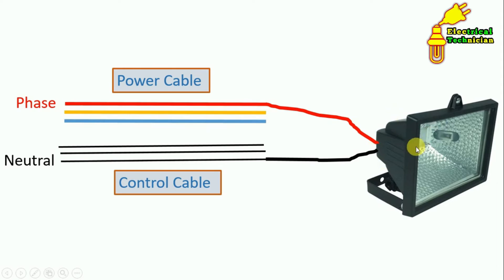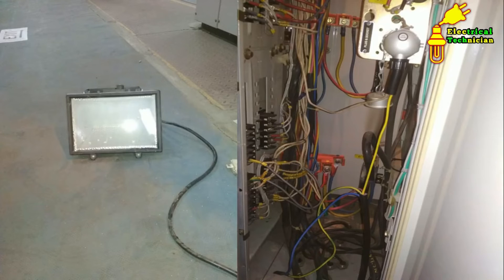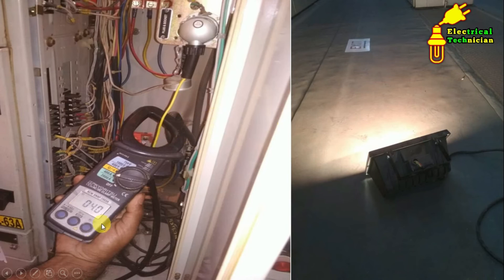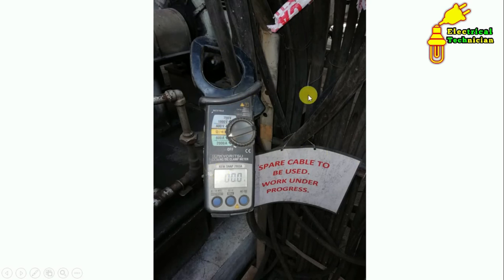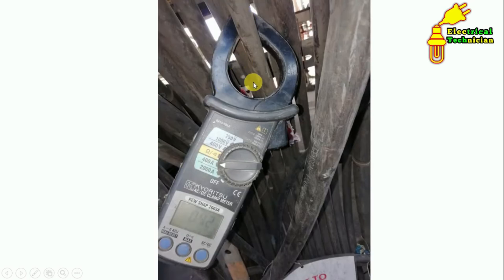We have to provide phase supply and neutral supply to the halogen lamp, and it must be through two separate cables. First of all, we measured the current at the source — it was showing 4A. We came to know that the halogen lamp is consuming 4A. Now at the place where we had to identify the cable, we started measuring current. We didn't measure current in all cables randomly — we used a trick. The control cable of the motor was 7-core 2.5 sq mm, so we measured current in cables matching that thickness. Similarly, the power cable was 3-core 16 sq mm, so we measured current in cables of that thickness. When we measured current in this cable, it was showing zero ampere. But when we measured current in this cable, we got a value of 4.2 ampere.